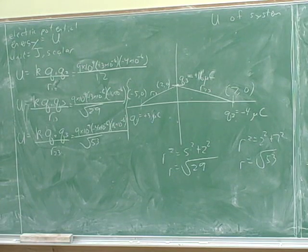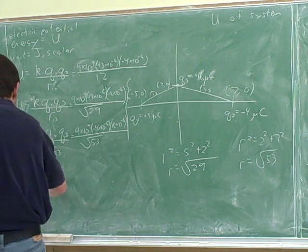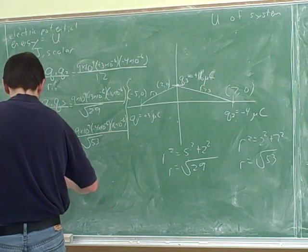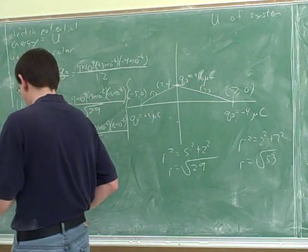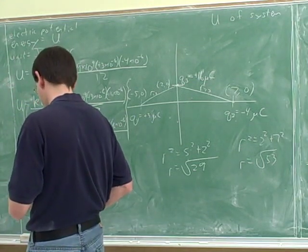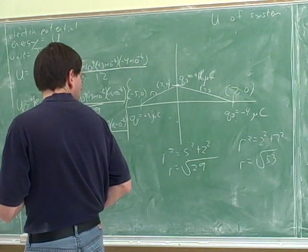So, except for rounding error, we have the same answer, so about negative .008. And the units for that are? The units for that are joules.